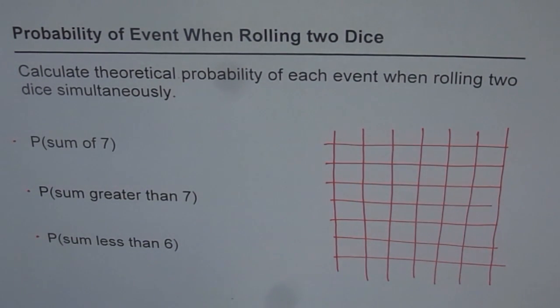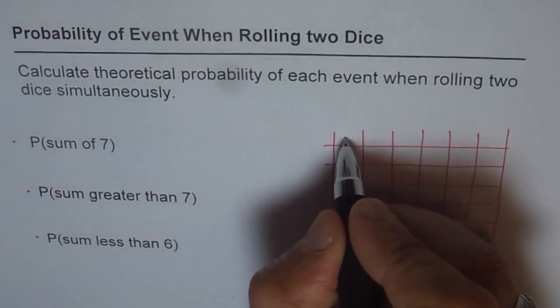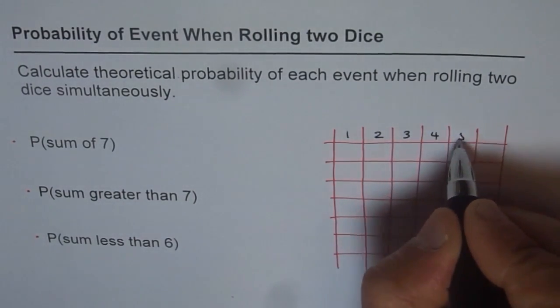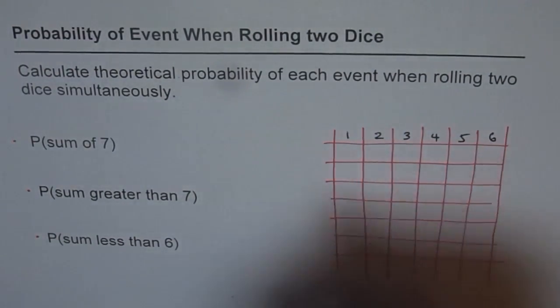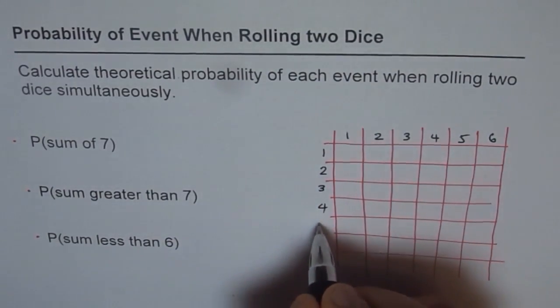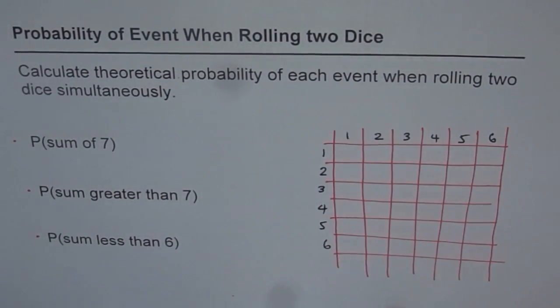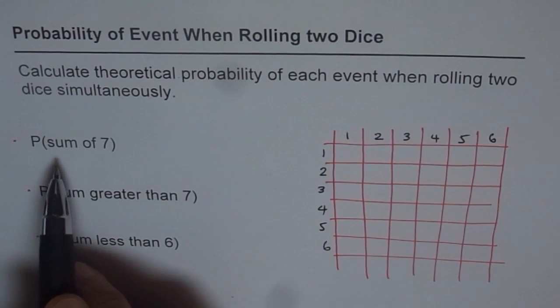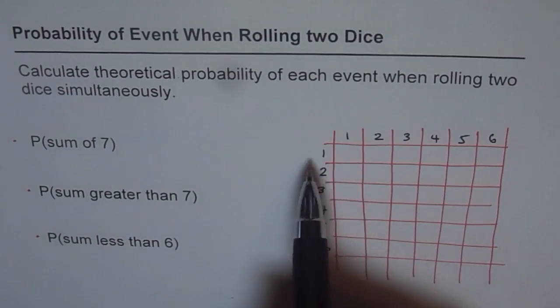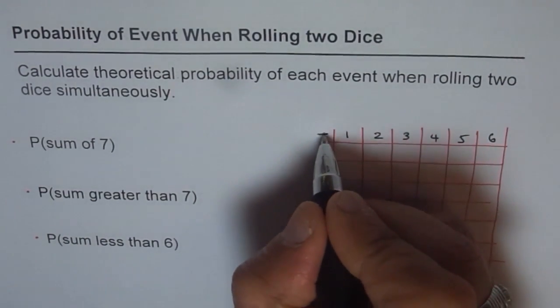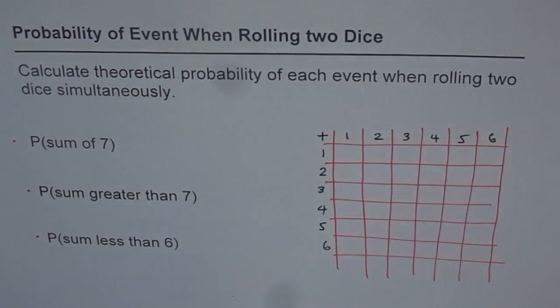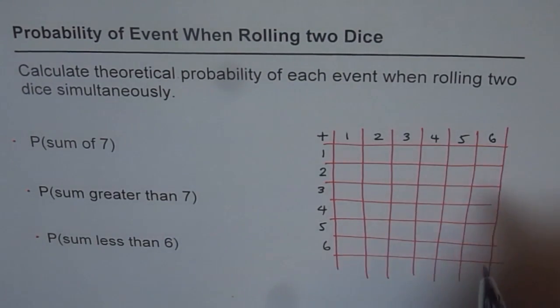Let's say dice one, we could get number one, two, three, four, five, or six. And with the other dice also, when you roll, you can get numbers like one, two, three, four, five, and six. Now what operation are we doing? We're throwing the two dice and adding. Sum means add them up. So let's try to add them up and fill up this table first.